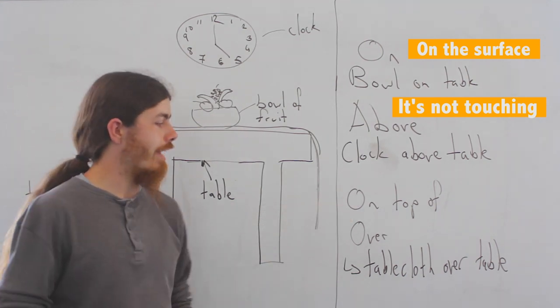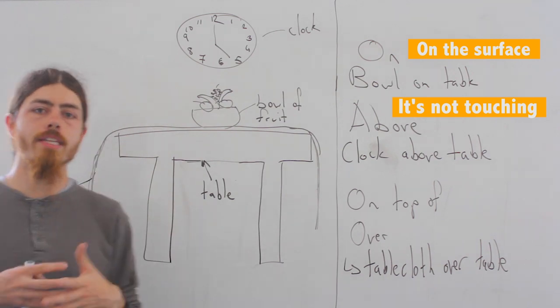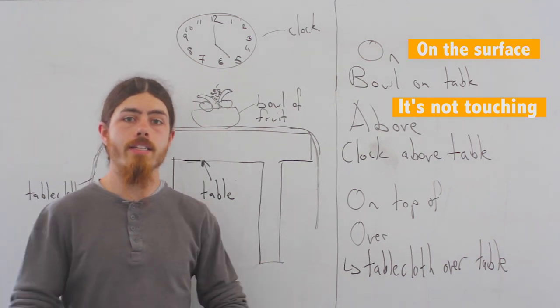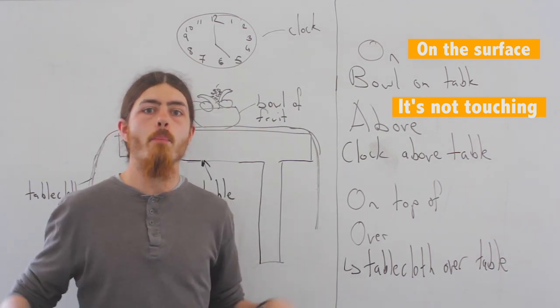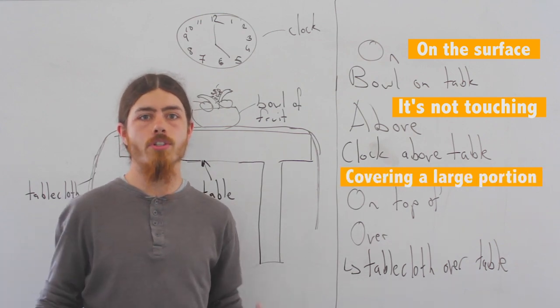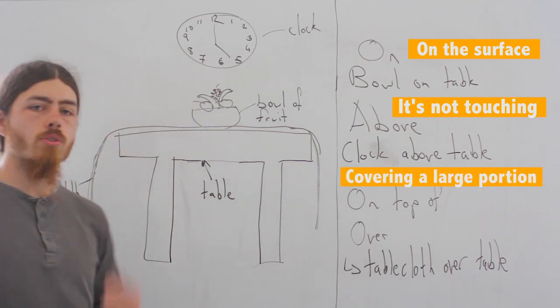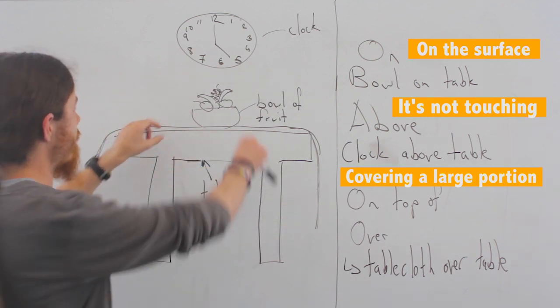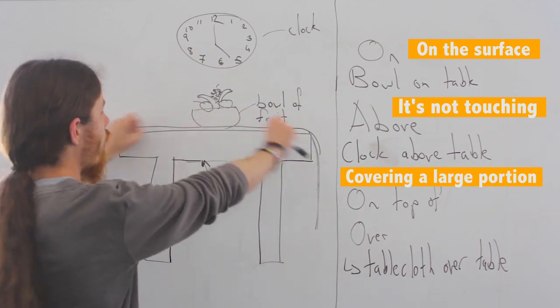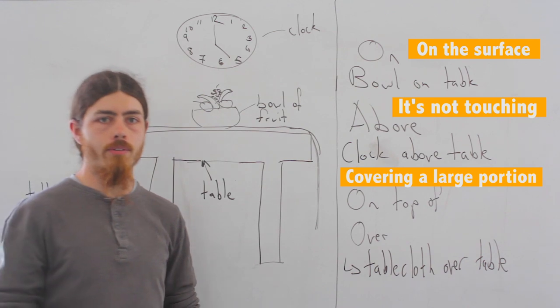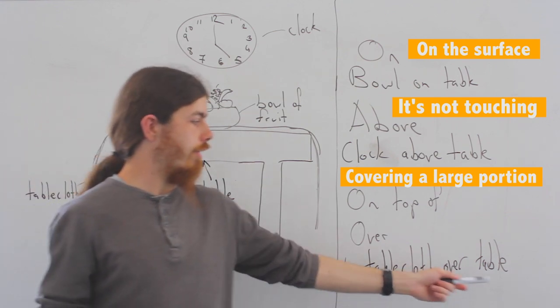And then, on top of and over, we use these to describe something that is on a surface, but it is covering a large portion of the surface, not just one specific spot. In this case, the tablecloth covers. It is over the entire table. So the tablecloth is over the table.